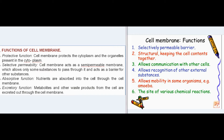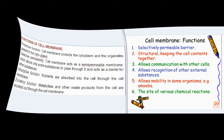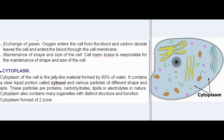Functions of the cell membrane include: protective function — it protects the cytoplasm and organelles; selective permeability — it acts as a semi-permeable membrane allowing only some substances through; absorptive function — nutrients are absorbed into the cell through it; excretory function — metabolites and waste products are excreted out; exchange of gases — oxygen enters from blood and carbon dioxide leaves; and maintenance of shape and size of the cell.